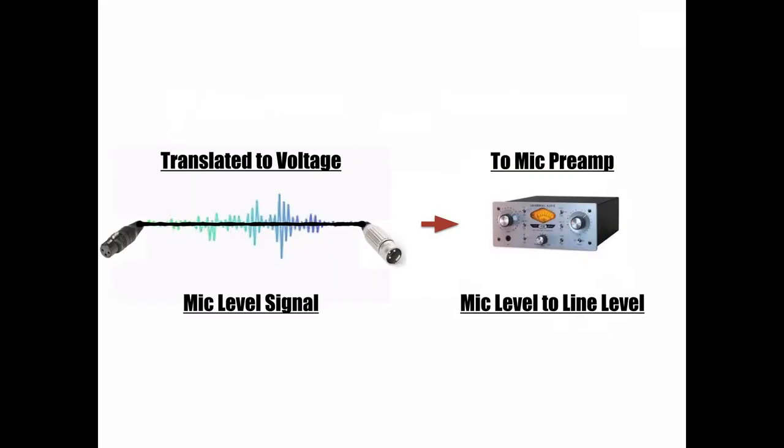The signal that a microphone generates is called mic level, which is a very weak signal. You need a mic preamp to convert the signal to a more appropriate level, known as line level, which is 50 dB higher than mic level. Any recording device would have trouble capturing the signal without a mic preamp simply because it is so low in level. Mic preamps come in many different models and price ranges. It's important to do your research before buying a mic pre — you really do pay for what you get. There are some really noisy mic preamps out there, so be aware of that if you're in the market for one.